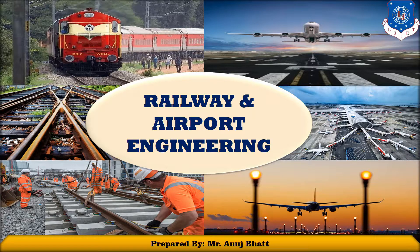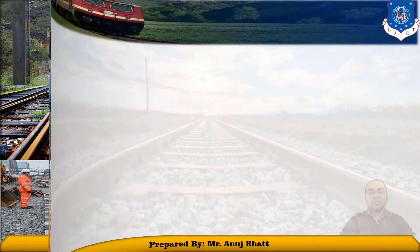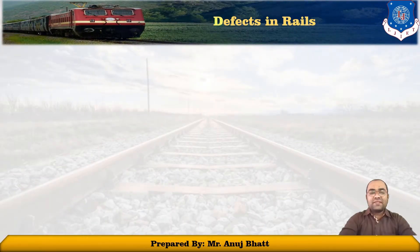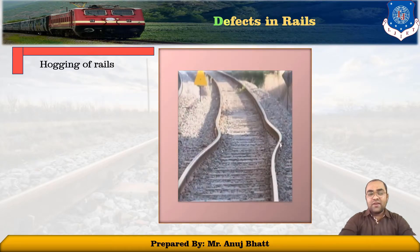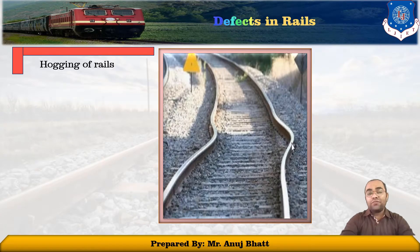In today's lecture, we will discuss about defects that occur in the rails. Starting the lecture on defects in rails — there are five different types of defects observed on the rails. The first is the hogging of rails.